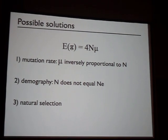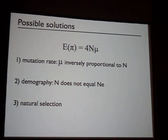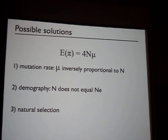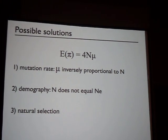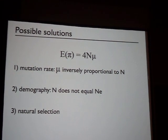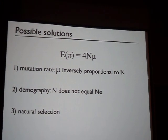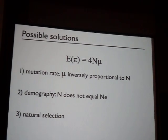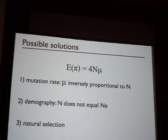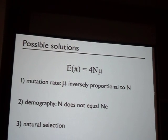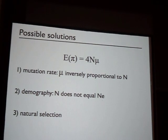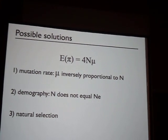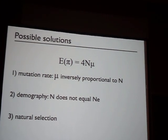The expectation of the average pairwise difference between two chromosomes is going to be 4Ne times the mutation rate. One thing that could explain this is if the mutation rate mu is inversely proportional to the population size — as populations get bigger, the mutation rate gets lower, so neutral diversity would not be correlated with population size. What I want to focus on today is natural selection, and I'm going to tell you about how natural selection can reduce or eliminate the dependence of neutral diversity on population size, and show some evidence for why I think it can.